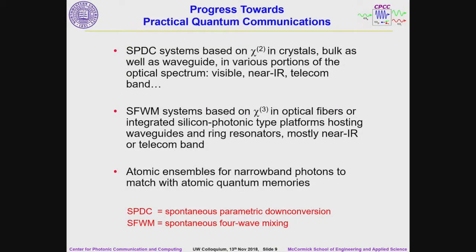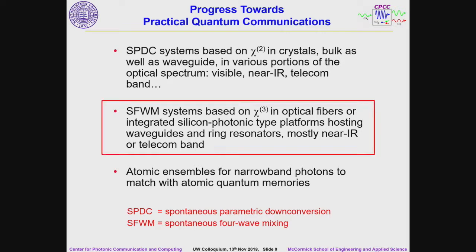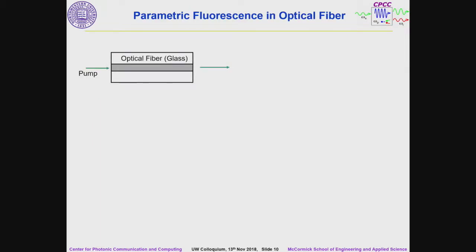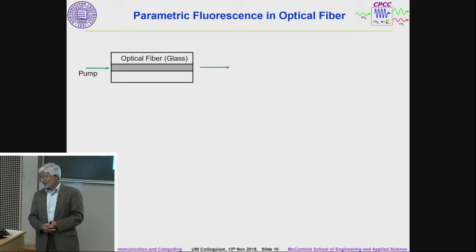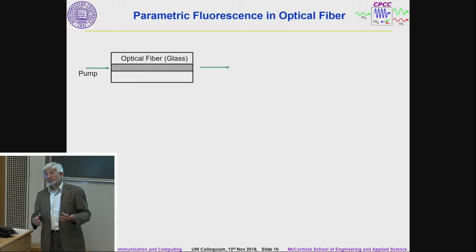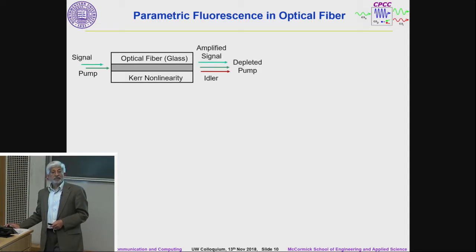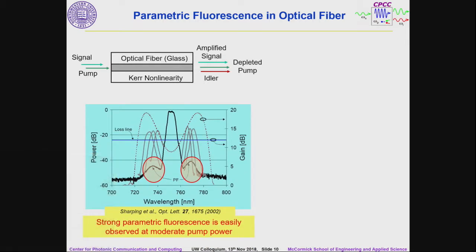Moving to spontaneous four-wave mixing sources, which are more suited for fiber optic entanglement distribution — that's where my work has been for the last 20 years or so. Early on in the late 90s, we were looking at parametric nonlinearity in fibers. Erbium amplifiers provide gain in fiber optic systems over a very limited bandwidth, about 40 nanometers around 1550 nanometers. Our interest was to look at the process of four-wave mixing to see if you could get very wide bandwidth operation.